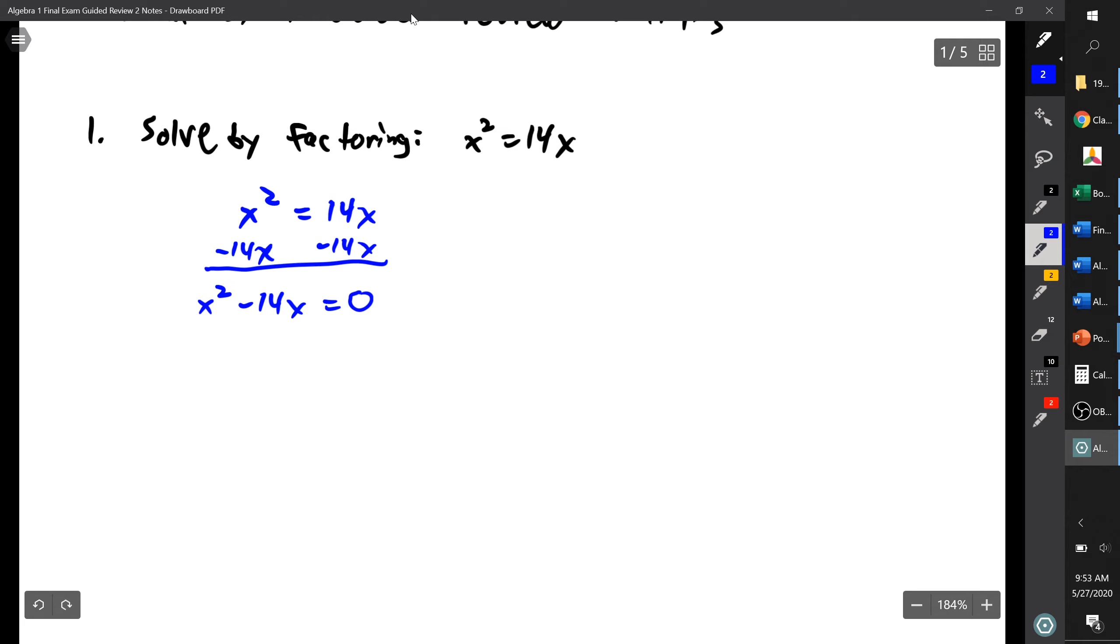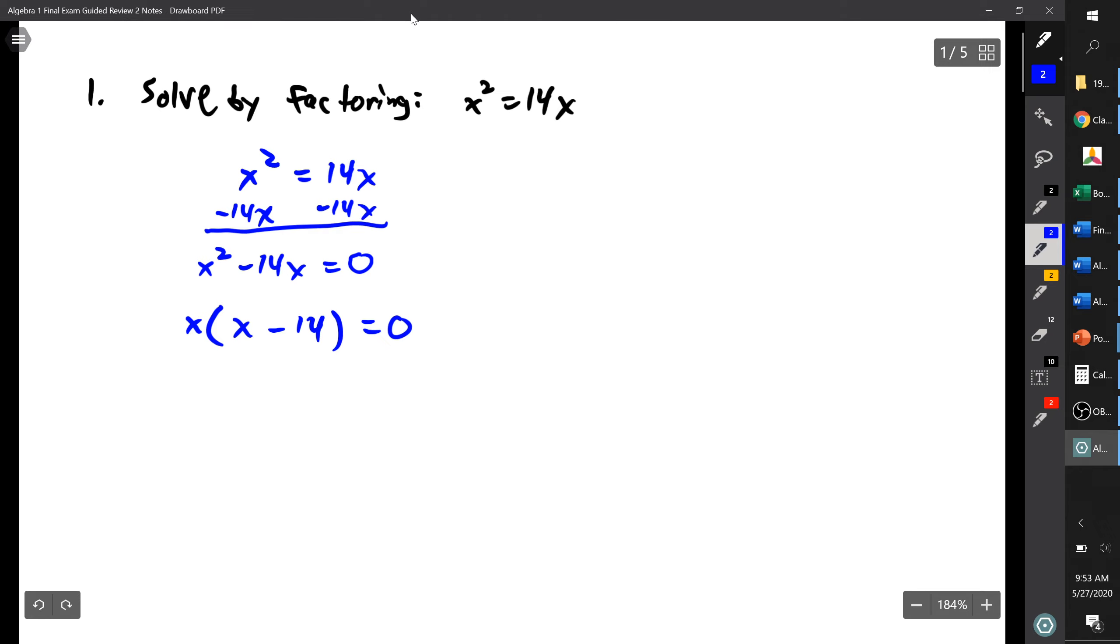Yay, I have equal zero. Now I need to do some kind of factoring, and the first thing to check for is, is there a greatest common factor that you can factor out? Because the goal is to get chunk times chunk where each chunk is at most has an x to the first, that you don't have any x squareds left. I see that each term has an x in it, so I can factor out an x. So that gives me x times x squared over x is x, negative 14x over x is minus 14, equals zero. Cool, I have a factor times a factor equals zero.